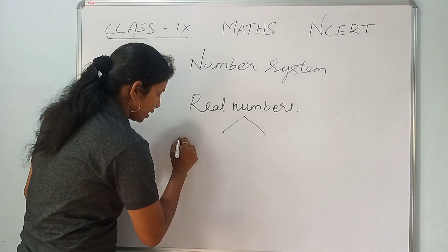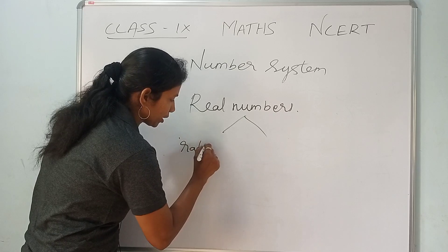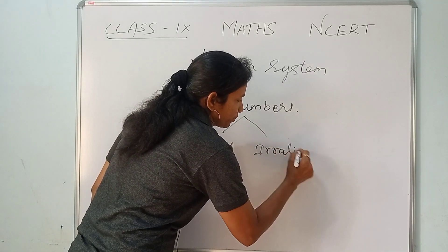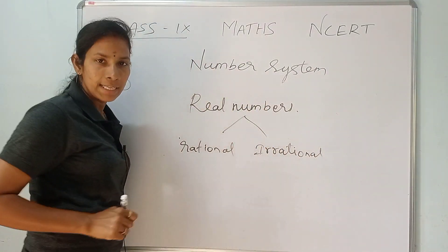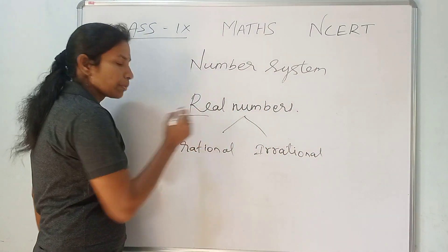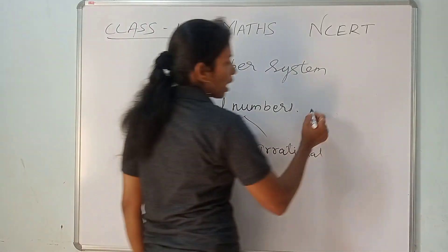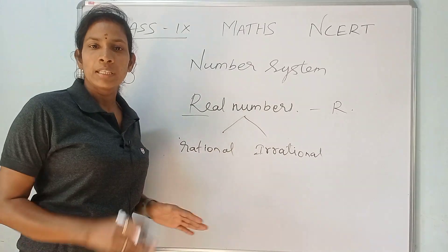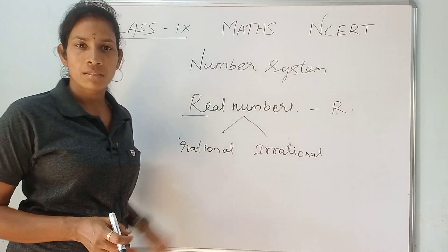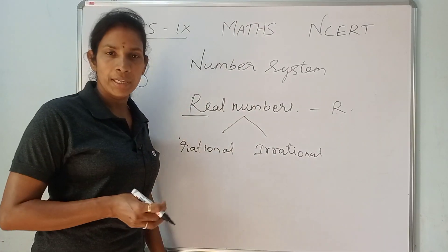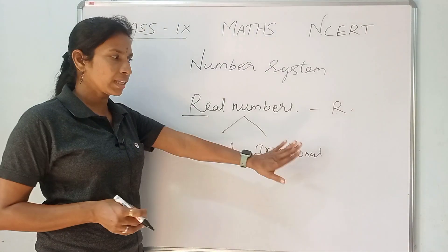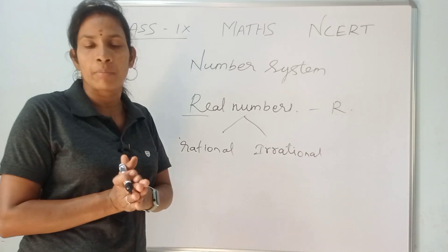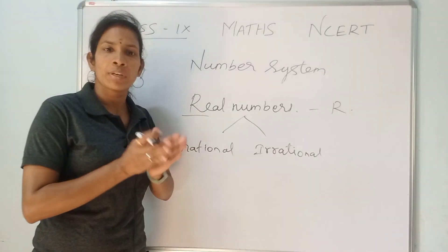Real numbers consist of both rational numbers and irrational numbers together. So the set of all rational numbers and irrational numbers forms the Real Numbers. Real numbers are denoted by R. So now we have covered all the basic number types in the number system.